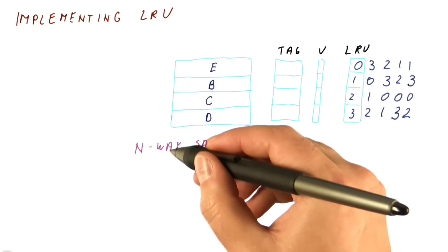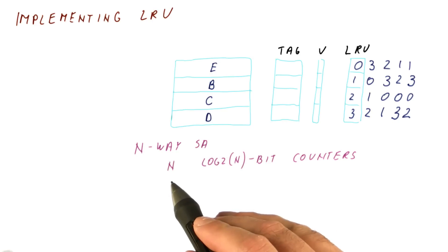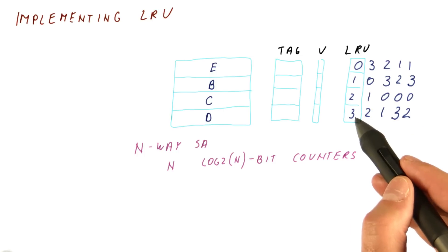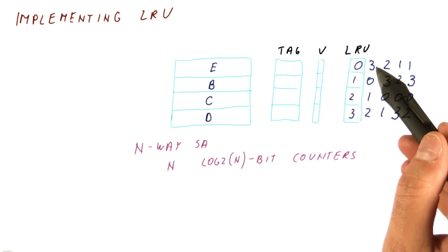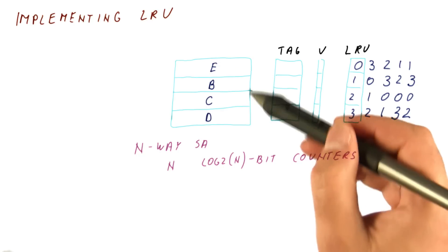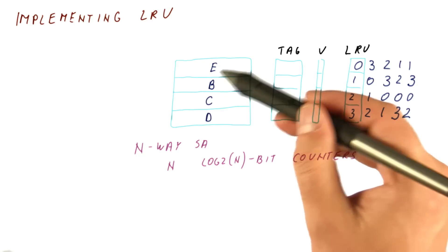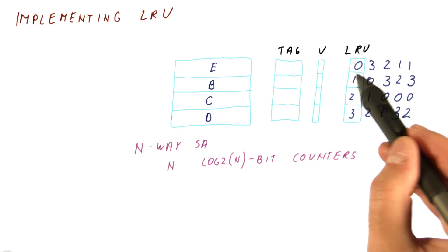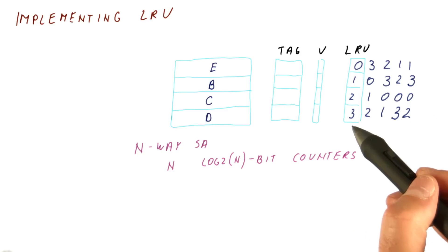For an n-way set associative cache, we need n counters whose size is log 2 of n. In this case, the size of the counters is 2 bits because they need to have a number between 0 and 3 to tell us where we are in the order of access in this set. So it's a 4-way set associative cache. That means we need 2 bits per counter and 4 counters.